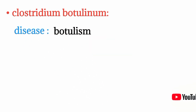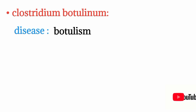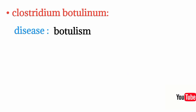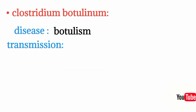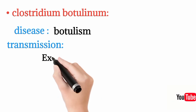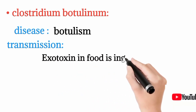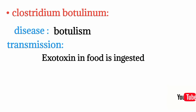Clostridium botulinum causes botulism, which is associated with flaccid paralysis — the opposite of the spastic paralysis caused by tetanus. Transmission is oral: the exotoxin may be present in improperly canned food and can be ingested.